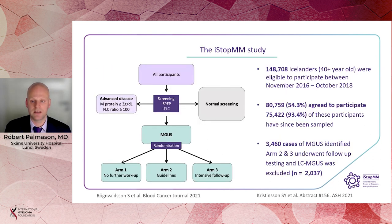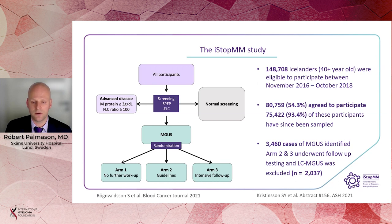The iSTOP-MM study is a large prospective population-based screening study for MGUS in Iceland, where just over 50% of the population over the age of 40 was enrolled, and the vast majority of these individuals were sampled at a later time point. The study identified 3,460 individuals with an M protein, and these individuals were enrolled in a randomized controlled clinical trial with respect to follow-up. Arms 2 and 3 underwent follow-up sampling and comprised the study cohort here. We excluded individuals with a light-chain MGUS and ended up with a total of 2,037 individuals with an M protein.